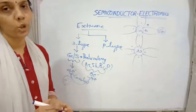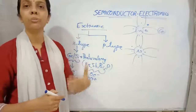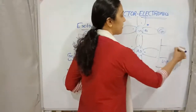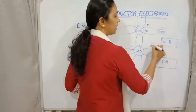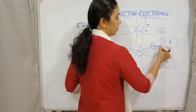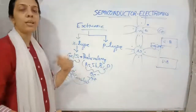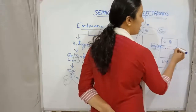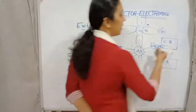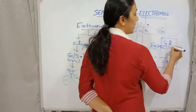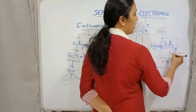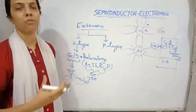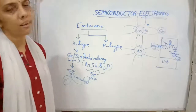Regarding the energy band for semiconductors: the valence band is at the bottom and the conduction band is above it, with an energy gap less than 3 electron volts. When pentavalent impurities are added, their extra electrons occupy an energy level just below the conduction band — this is called the donor energy level. With only a small amount of energy, these electrons jump to the conduction band.